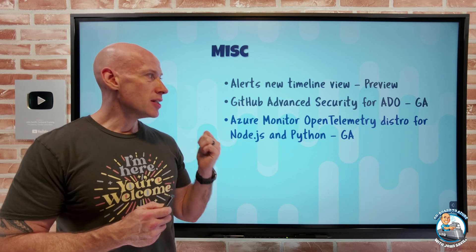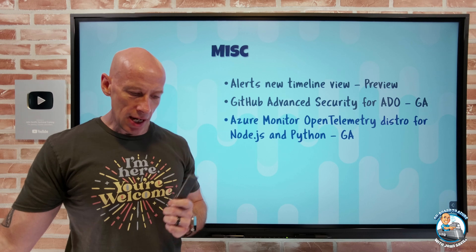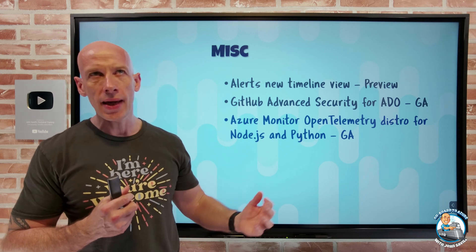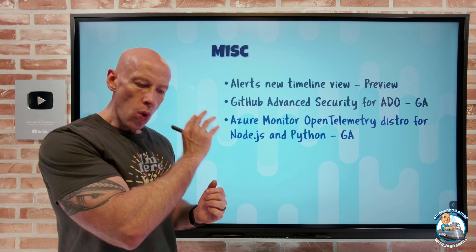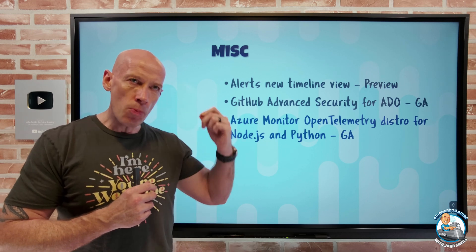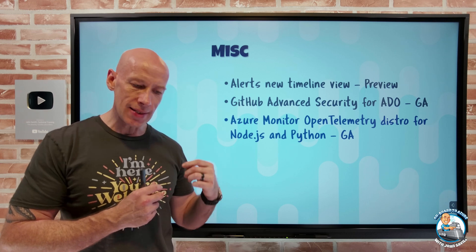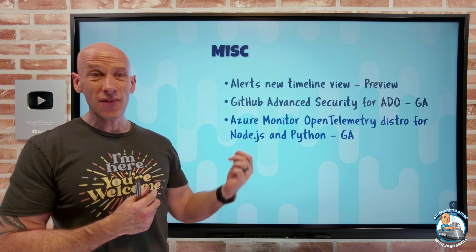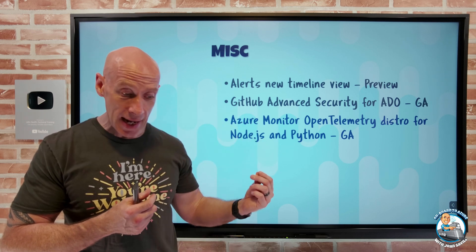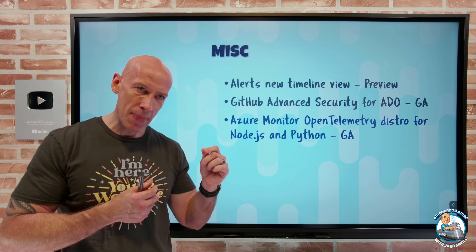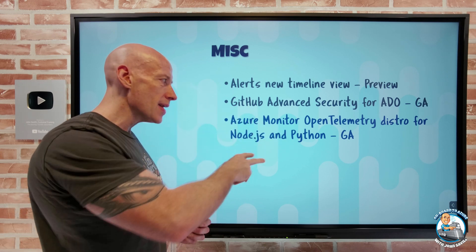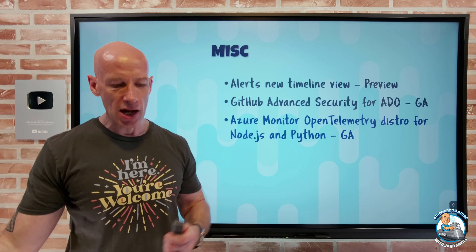Azure Monitor OpenTelemetry Distribution for Node.js and Python. OpenTelemetry is a vendor-neutral API for driving logging, metrics, and distributed traces. This package takes those capabilities and helps you easily integrate with Azure Monitor App Insights as the target. Additional benefits include Azure AD authentication, offline storage, automatic retries, App Insights standard metrics, and the ability to preserve traces using the App Insights SDKs. You still get the open nature of OpenTelemetry with some Azure niceness bundled on top.